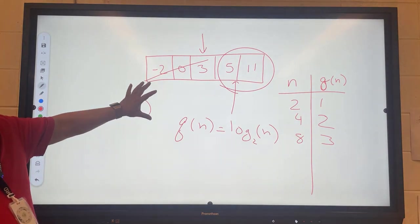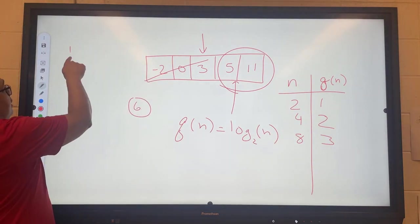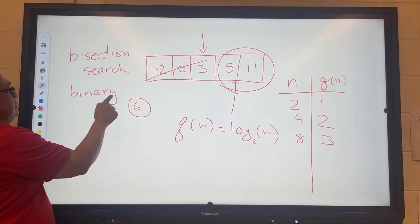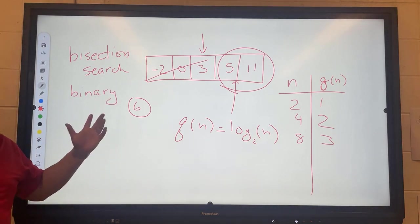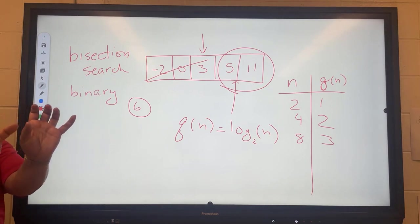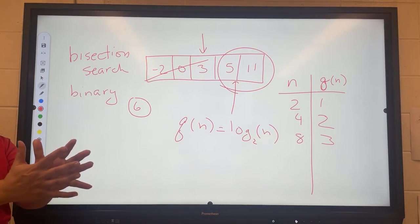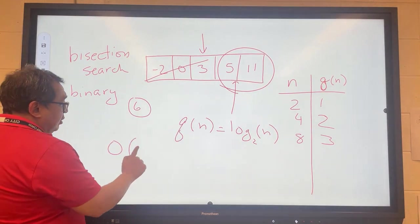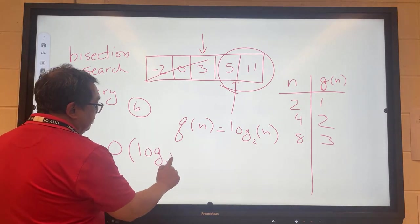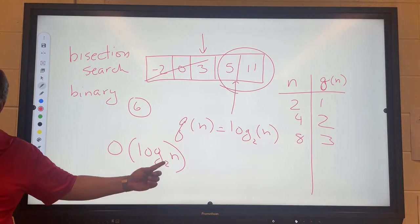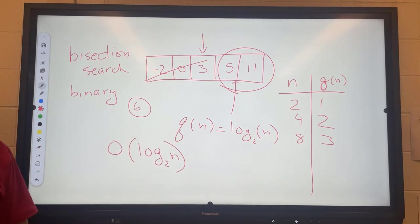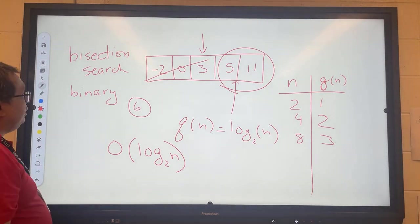For this sorted array technique, which is also called a bisection search, and sometimes it's called a binary search, these two things mean the same thing. You can probably guess why it's called that. Bisection means we cut it into two pieces each time, successively smaller pieces. We would say that our algorithm takes on the order of O of log base 2 of n comparisons. That's a lot faster than the O of n that we had before for the sequential search.